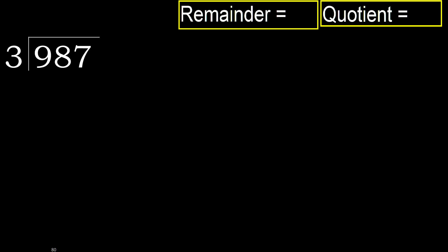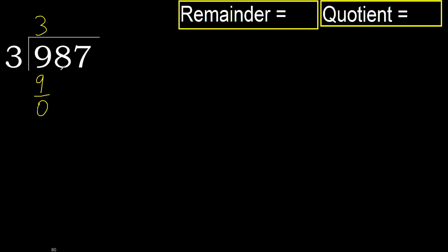987 divided by 3. 9 is not less, therefore start with 9. 3 multiplied by which number is nearest to 9 but not greater? 3 multiplied by 4 is 12, which is greater. 3 multiplied by 3 is 9, not greater. Subtract 9 minus 9 equals 0. Next.